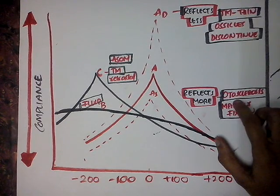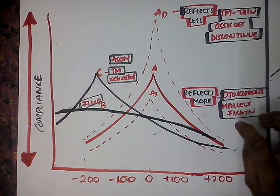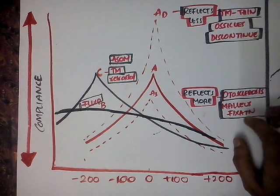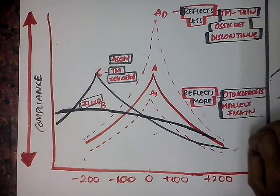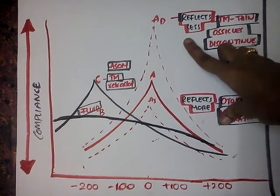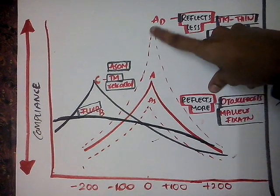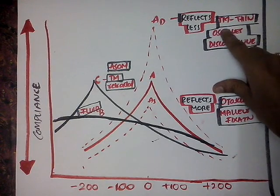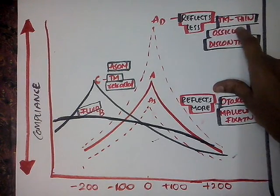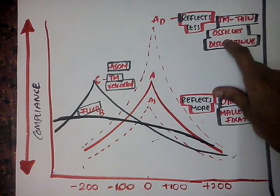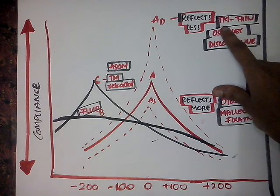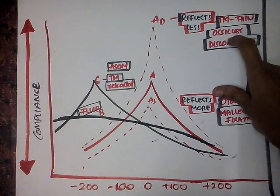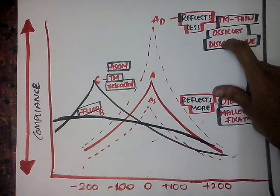As a result of otosclerosis and malleus fixation, more sound energy is reflected back rather than absorbed. Whereas AD — more compliance indicates less reflection of sound. It is seen in thin tympanic membrane and ossicular discontinuity, which absorb more sound than they reflect.